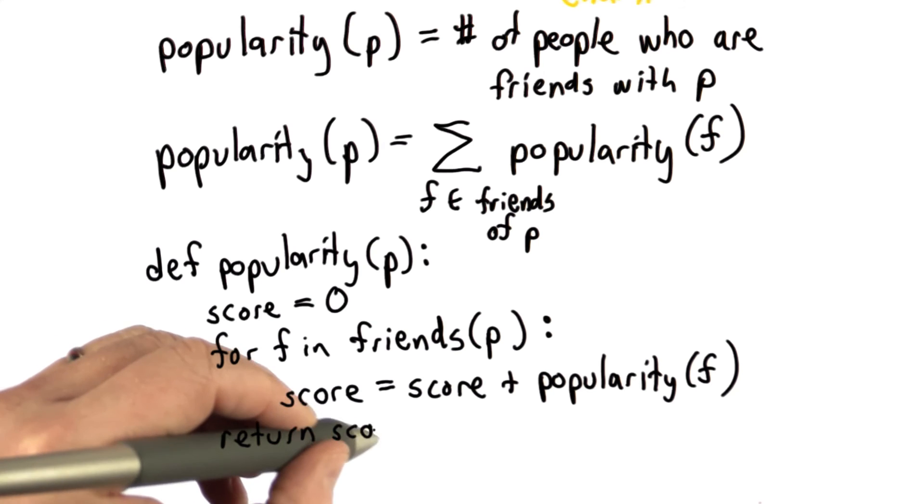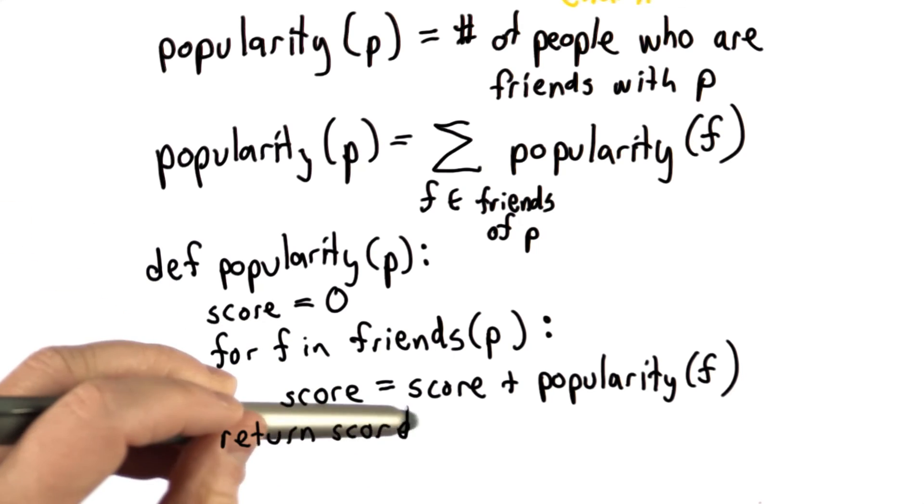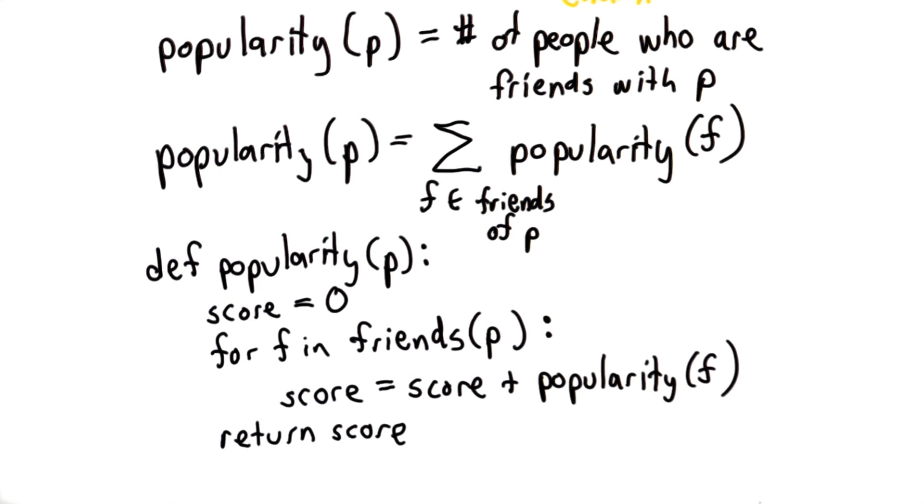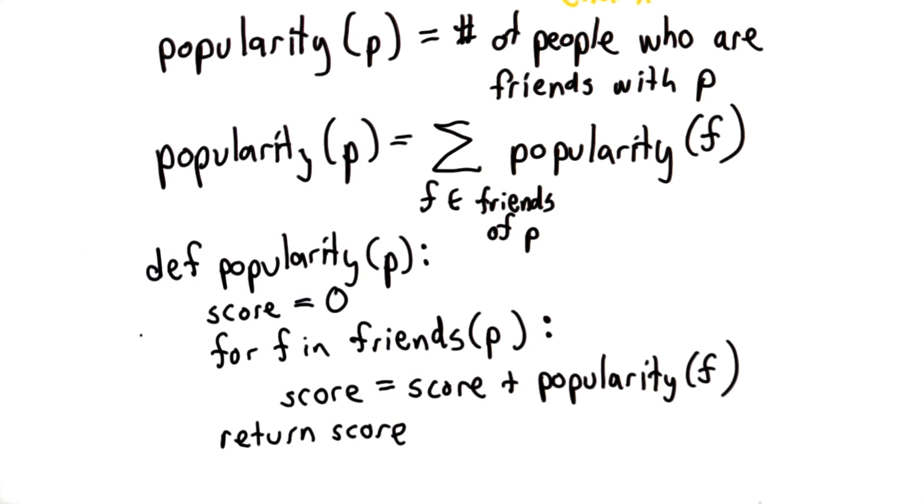So now you've seen a mathematical definition of popularity. You've seen the same thing as code. I'm going to ask you a very important quiz question next. It's an easy one to get right if you try twice because there's only two answers. But think about it carefully. See if you can get it right the first time.